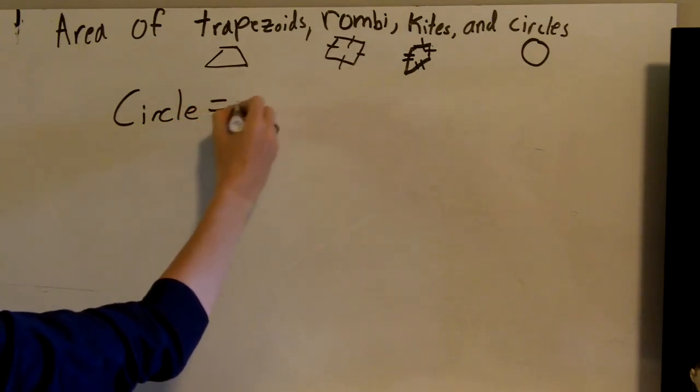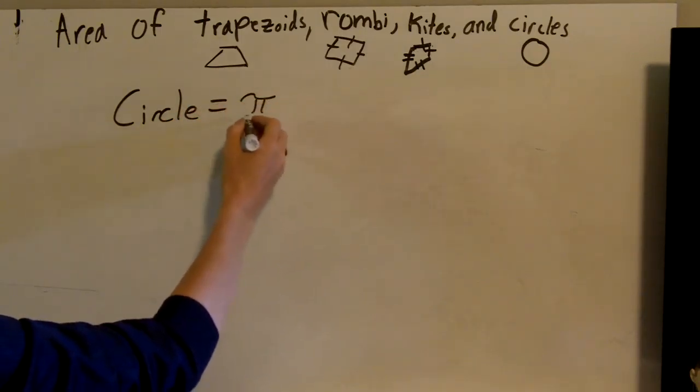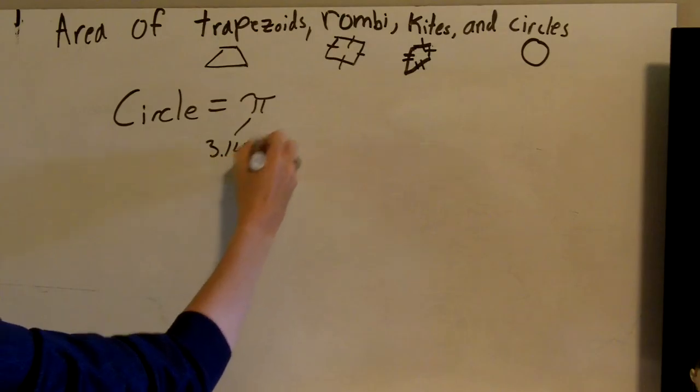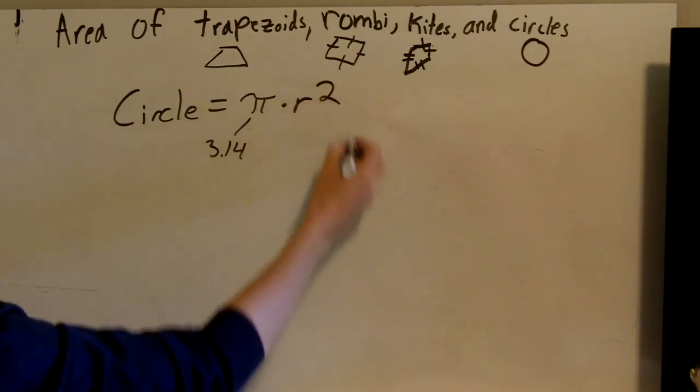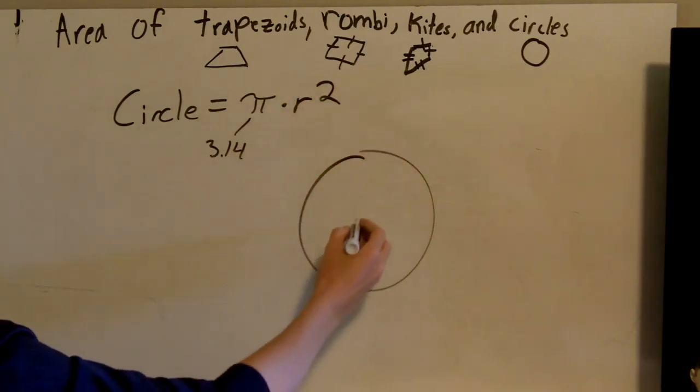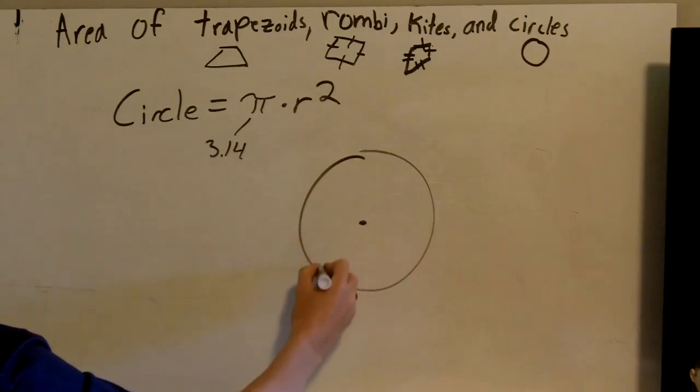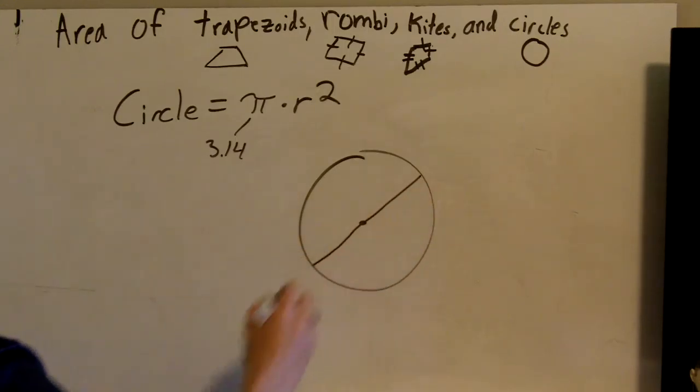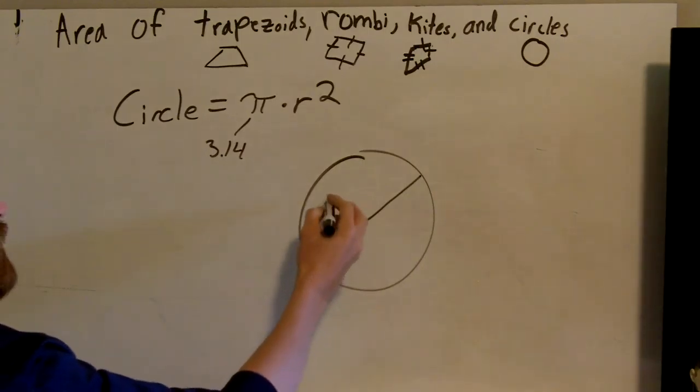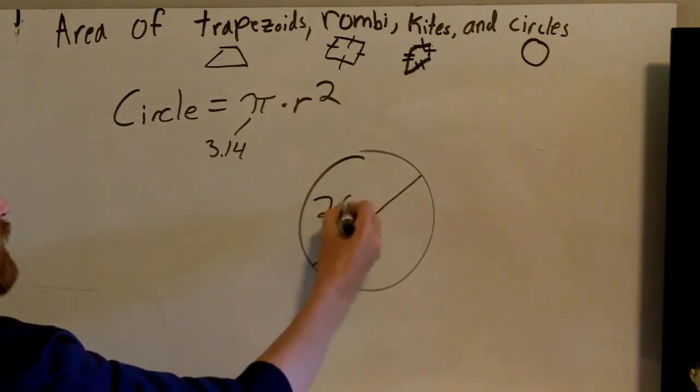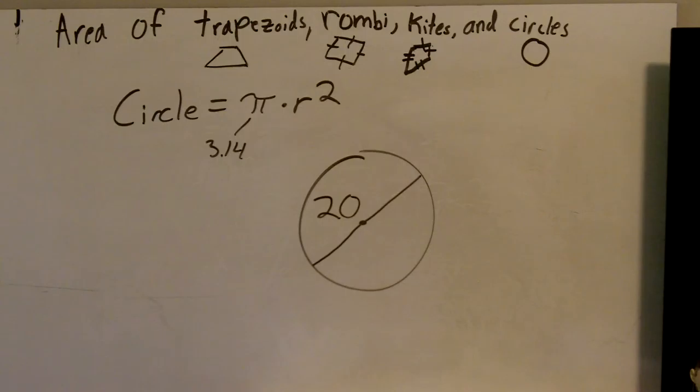We have pi, which you can use as 3.14, times our radius squared. So here's our circle. I'm going to do one that is the diameter, and then I'll give you one where it's the radius. So if I give you that this is 20, our diameter is 20. So what I need to do is I know my diameter equals 20. I need my radius.